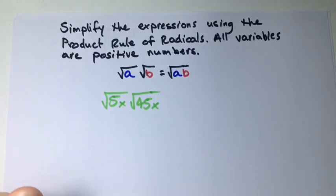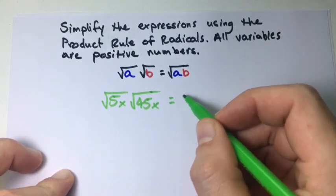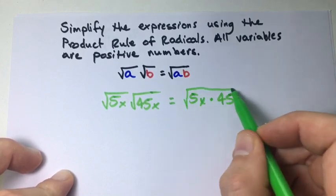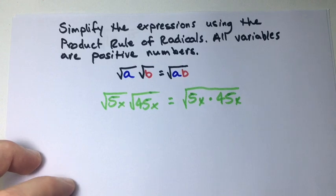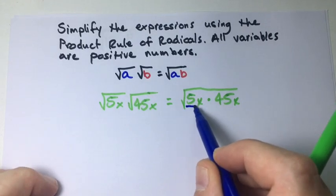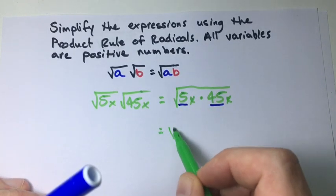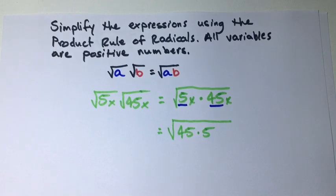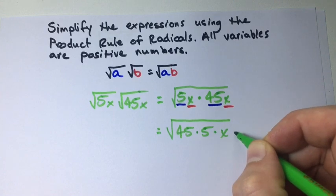Let's look at our example: the square root of 5x times the square root of 45x. First, we can write these under the same radical, so this means 5x times 45x all under the same radical. Since we have 5 and 45, we can multiply those together, giving us 45 times 5, and we have two x's, so times x times x.